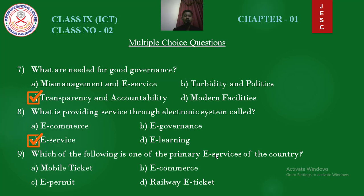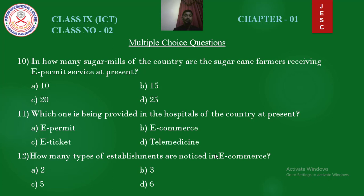Question number 9: Which of the following is one of the primary e-services of the country? Options: mobile ticket, e-commerce, e-permits. Answer is e-permits. Question number 10: In how many sugar mills of the country are the sugar cane farmers receiving e-permits service at present? Options: 10, 15, 20, 25. Answer is 15.